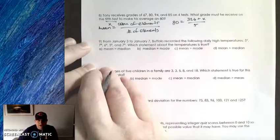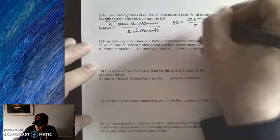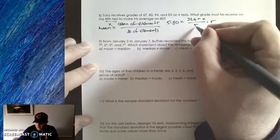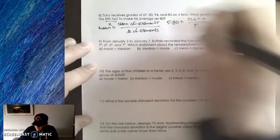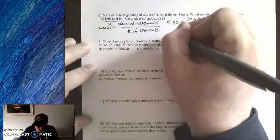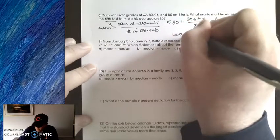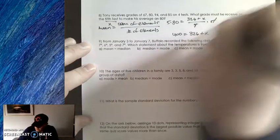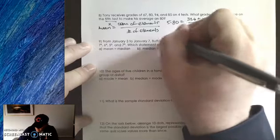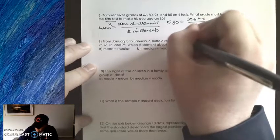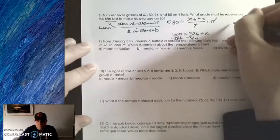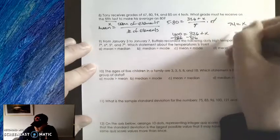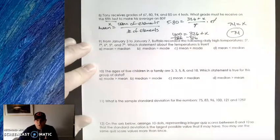This is where it becomes an algebra problem. We're going to multiply both sides by 5 to get rid of this 5 in the denominator. We cancel out the fives. So 5 times 80 is 400. So 326 plus X is equal to 400. Minus 326 from both sides. 400 minus 326 is 74. And that's the test score that you need.